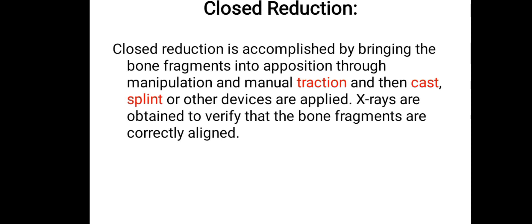Closed reduction is accomplished by bringing the bone fragment into position through manipulation and manual traction, and then a cast, splint, or other device is applied. X-rays are obtained to verify that the bone fragments are correctly aligned.